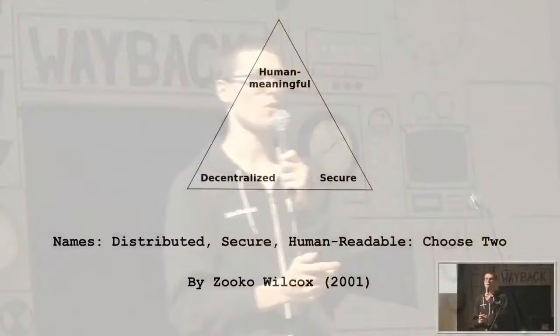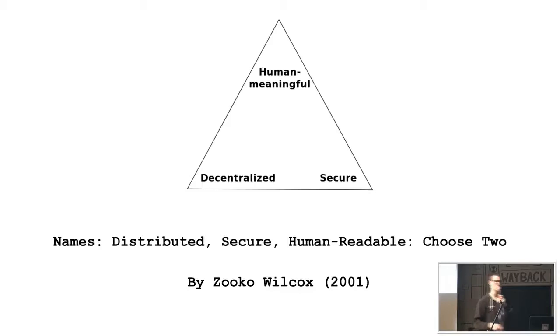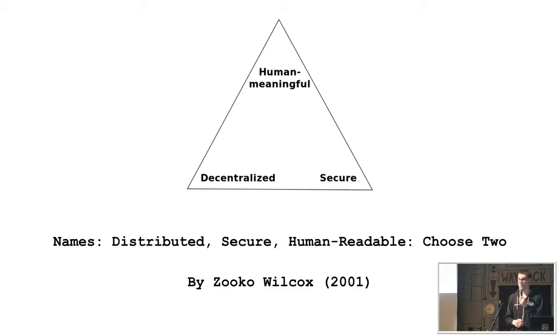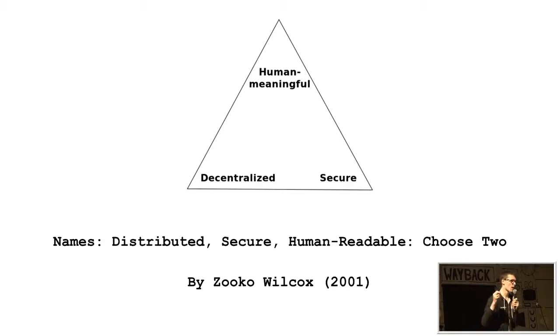At the time Zooko first formulated Zooko's Triangle, he said you can only choose two. For example, a name that your parents gave you is human meaningful — I can tell it to you and you understand it right away. It's also decentralized because your parents gave it to you, not some central authority. But it's not secure, because people can have the same name — there could be thousands of John Smiths.